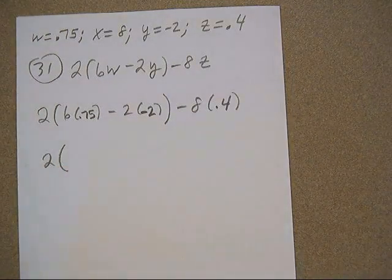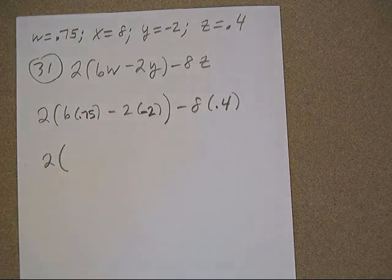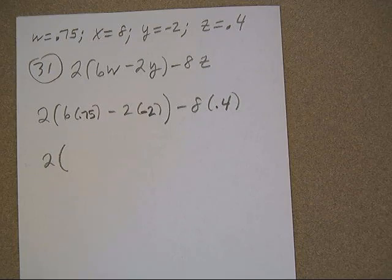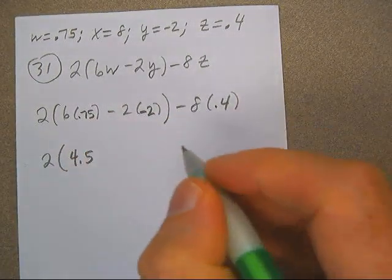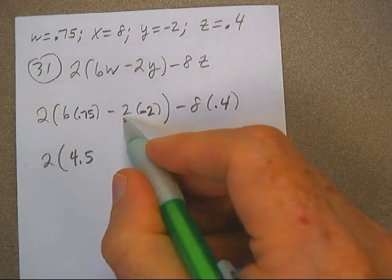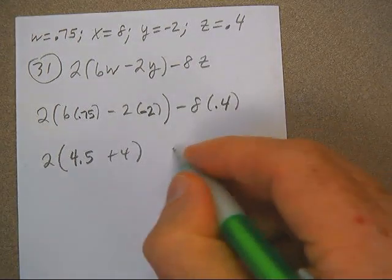Wonder how much money that would be. I got three quarters six times, that's four dollars and fifty cents. Here's a negative times a negative, that's going to be a positive in here. Eight times four is 32.